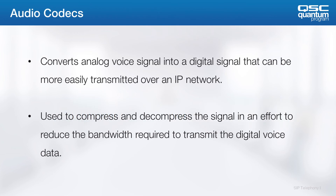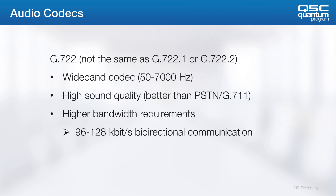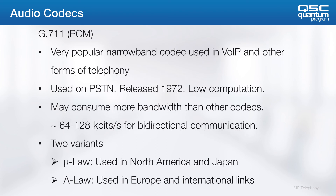Let's talk audio codecs, which compress and decompress the signal in an effort to reduce the bandwidth and transmit the digital voice data. We'll start with the high-fidelity codecs and work our way down. Q-SYS supports G.722, which is not to be confused with the .1 and .2 variants — those are slightly different. G.722 is a wideband codec for higher quality sound. It's a newer codec compared to G.711. The bi-directional communication used is between 96 and 128 kilobytes per second. G.711 is still a very popular codec that has been around since 1972 and was used on the public switched telephone network. One great advantage is that it has low computational requirements to compress and decompress.